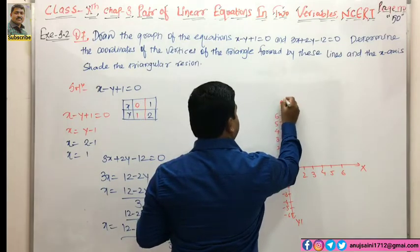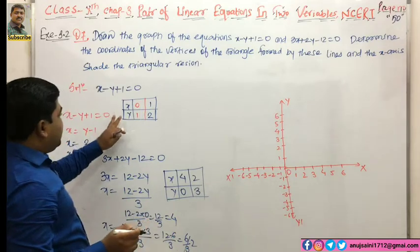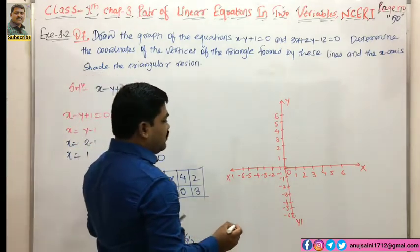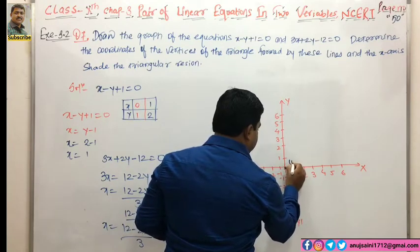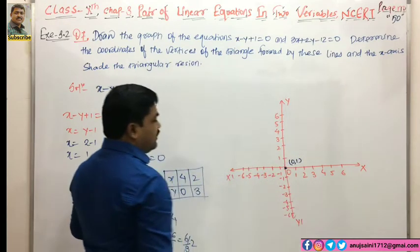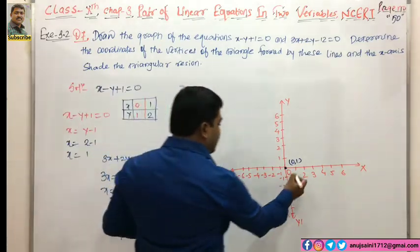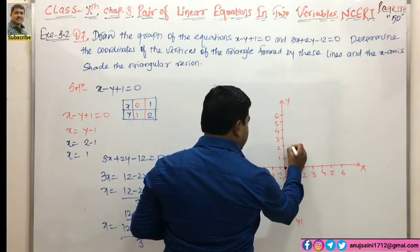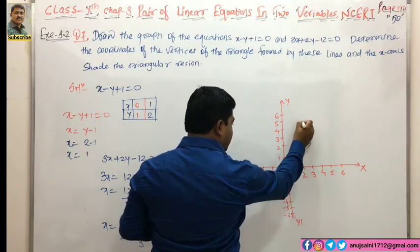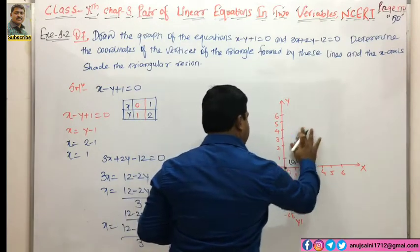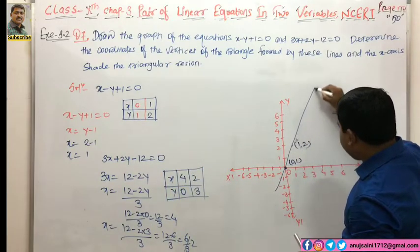First equation के लिए: x की value 0, y की value 1 - point (0, 1) plot करते हैं। फिर x की value 1, y की value 2 - point (1, 2) plot करते हैं। इन दोनों points को straight line से draw कर देंगे।